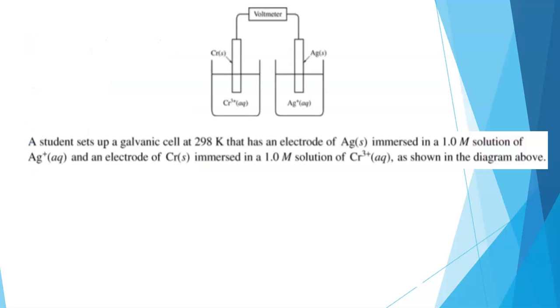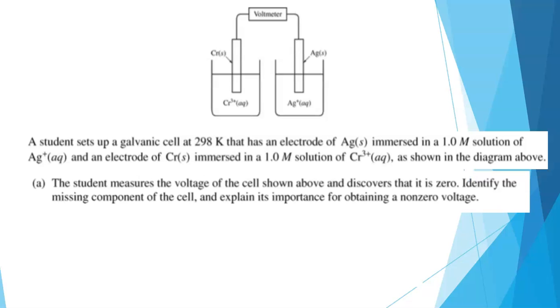As soon as I saw that diagram, I knew this was a question about a galvanic cell. A student sets up a galvanic cell at 298 Kelvin with an electrode of Ag immersed in a 1.0 M solution of Ag+ ions, and an electrode of chromium metal immersed in a 1.0 M solution of Cr³⁺ ions, as shown in the diagram. The student measures the voltage of the cell shown above and discovers that it is zero. What part of the cell is missing? And why is this component important for obtaining a nonzero voltage?